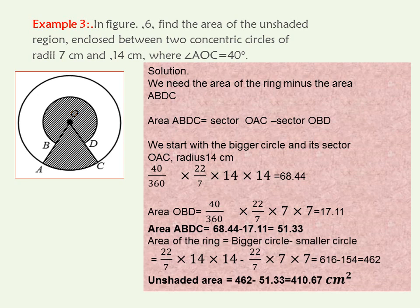To get this area ABDC, we need to get the area of the larger sector OAC minus the smaller sector OBD.